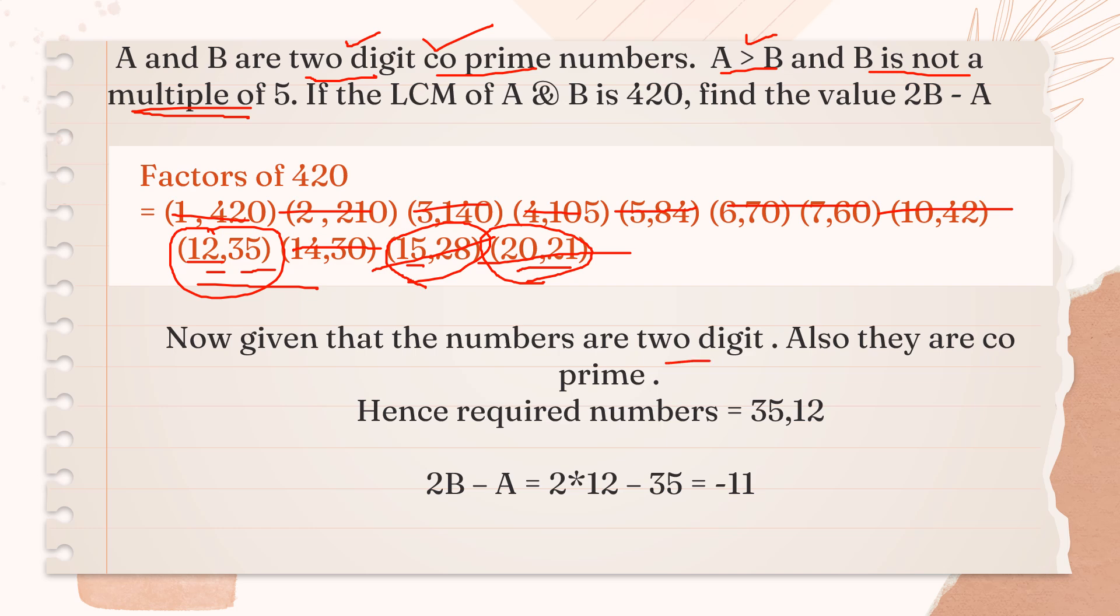Given numbers are two-digit co-prime as I told you. Now, the required numbers are 35 and 12. Another mistake which students generally do is they will write 12 and 35. No. The condition states that A is greater than B. So, you have to write 35 in the place of A. If you do it otherwise, your answer will be wrong because you have to calculate 2B minus A.